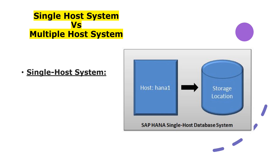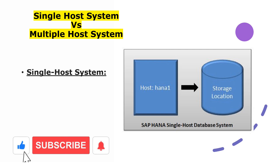A single host system is the simplest installation type. It is possible to run an SAP HANA system entirely on one host and scale the system according to need. For example, if you installed with some hardware and memory according to the current project size and later want to scale up, you have to increase the hardware capacity for that same host only. This is the single host system concept.